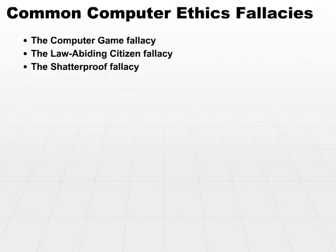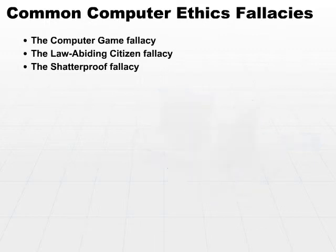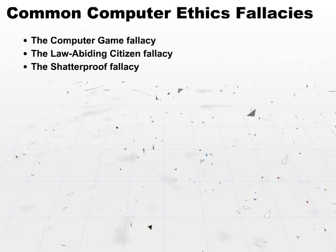The shatterproof fallacy is yet another fallacy that basically says whatever I do is only online and it's not going to hurt anybody else. But in reality, activity that you conduct online may have many other consequences, many of which you may not even consider. For example, what happens if you send out an email bomb — sending email to thousands and thousands of users? Does it affect anyone? Chances are yes.